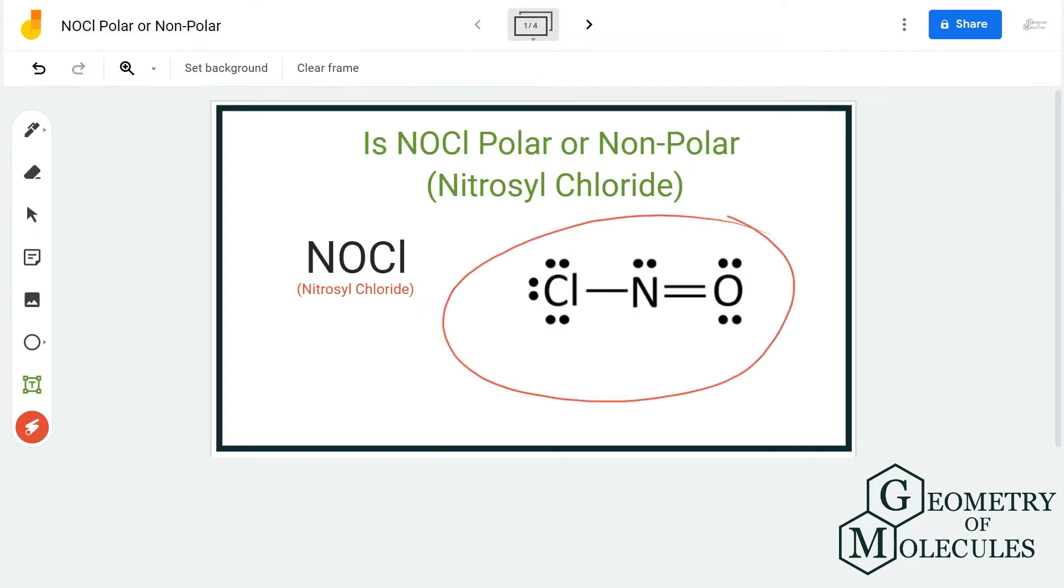Here is the Lewis structure of NOCl, in which nitrogen is the central atom forming a double bond with oxygen and a single bond with chlorine. This is the arrangement you can see here.